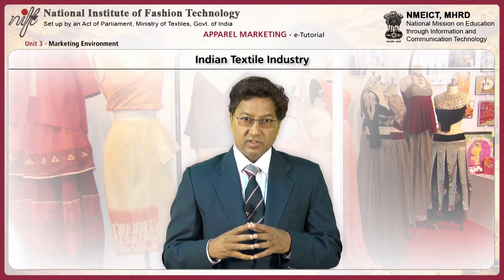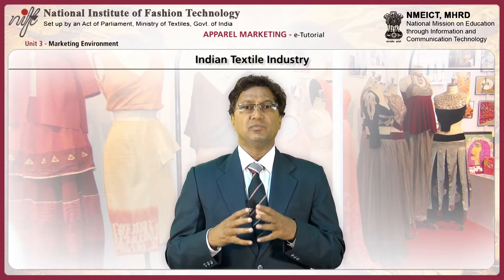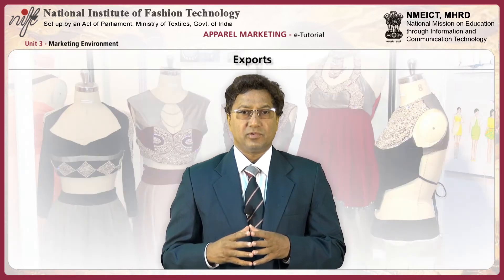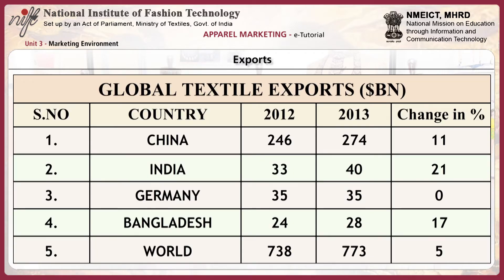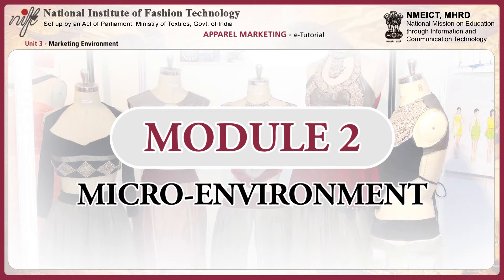Fashion apparel industry is one of the fastest moving industries and is more consumer driven. India's textile exports were estimated at 40 billion US dollars in 2013, compared with China's 274 billion US dollars, so there is a lot of scope for India to grow in terms of exports. Textiles include everything from fibre and yarn to fabric, made-ups, and ready-made garments made of cotton, silk, wool, and synthetic yarn.